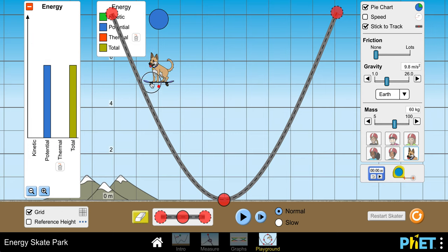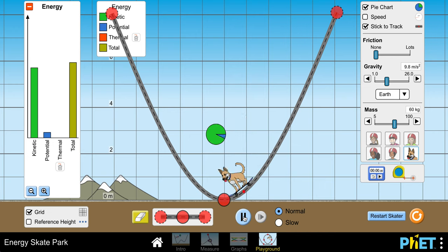I'll put the dog back on the track here at the five meter mark. Set it into motion. It goes back to the five meter mark. Play with this. See what you observe. Mess with the track. Make your own track.